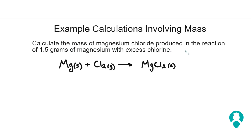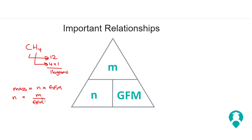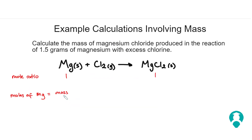Let's look at another example: calculate the mass of magnesium chloride produced in the reaction of 1.5 grams of magnesium with excess chlorine. Excess chlorine just means there's plenty of it and you don't have to worry about it. The equation is balanced. We're looking at a 1 to 1 mole ratio. The number of moles of magnesium is mass over GFM, which is 1.5 divided by 24.3, giving us 0.06 moles.